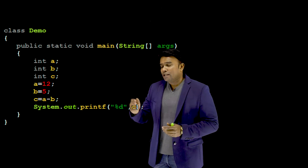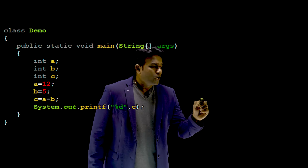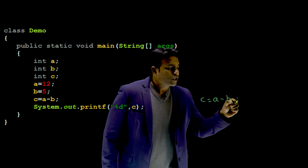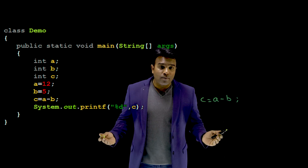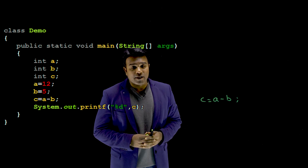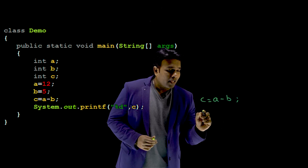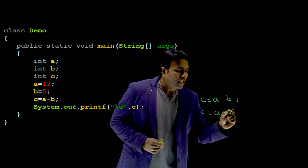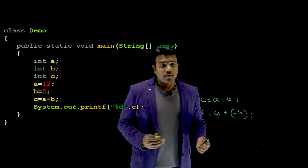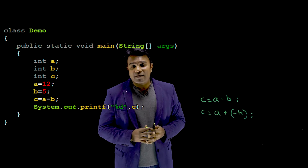Let me get back to my original program. In this program, the issue I had was with this statement. I am supposed to perform subtraction without using the minus operator. So what do I do? Very simple. I will rewrite this as A plus of minus B, and I hope all of you agree that this is the same.